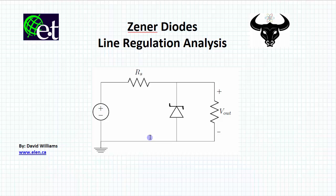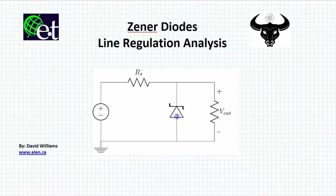There'll be a couple of extremes that we'll look at. One is the case where what is the minimum amount of voltage that we can have that will still allow enough current to go through the Zener diode to keep it in regulation mode. And then the other extreme is how much voltage can we have from the source that will not push too much current through the Zener diode to cause it to burn out or have a shorter life expectancy.